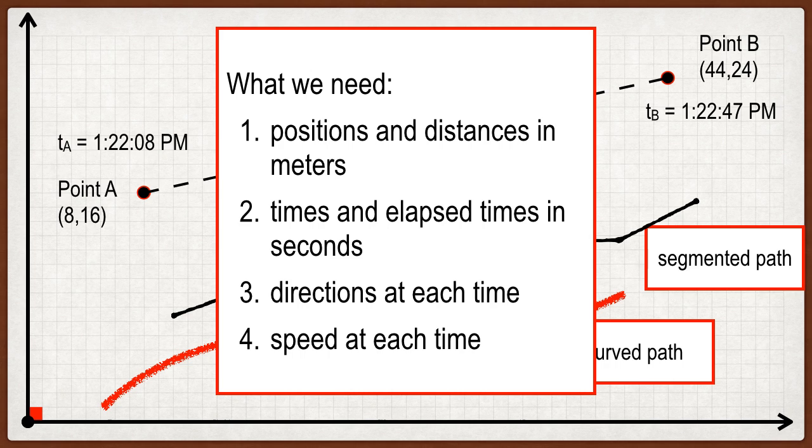We need positions, and from those positions, calculating a distance in meters, usually. Times - we have to read the clock a couple, three times or more, and then figure out elapsed time, delta T, from those timestamps. We did not talk about it too much last time. We will talk about today the directions of motion and the speed. We did talk about the speed. Our homework was a little bit of distance calculation and a little bit of speed calculation.